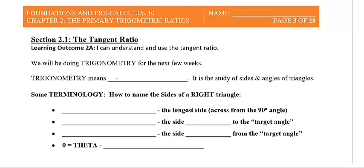Alright, this is section 2.1 of the Foundation Pre-Calculus 10 course. We're hopefully going to figure out something called the tangent ratio today, and we're going to be studying this thing called trigonometry for the next few weeks. If you don't know what trigonometry means, it's really just the study of triangles — in particular the sides and the angles of the triangle.